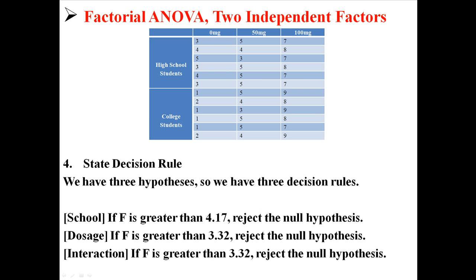So our three decision rules are: for school, if F is greater than 4.17 we're going to reject, and for dosage and interaction, if those Fs are greater than 3.32 we're going to reject. So we get to test three different hypotheses here about two main effects and one interaction effect.